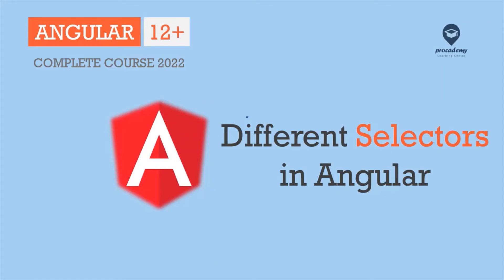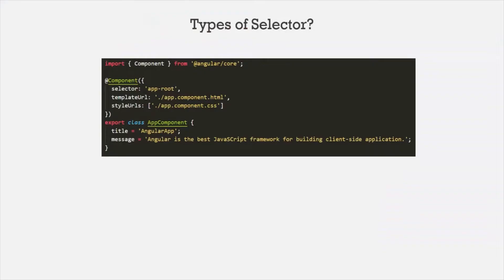In this lecture you will learn what the different types of selectors are in Angular. When we create a component, we specify a selector property for it. So far we have seen that we can use the value of that selector property as an HTML tag, but there are other ways of using this selector value.